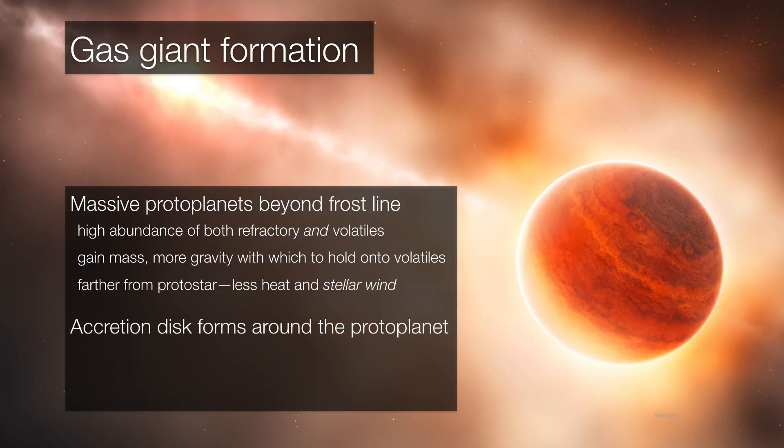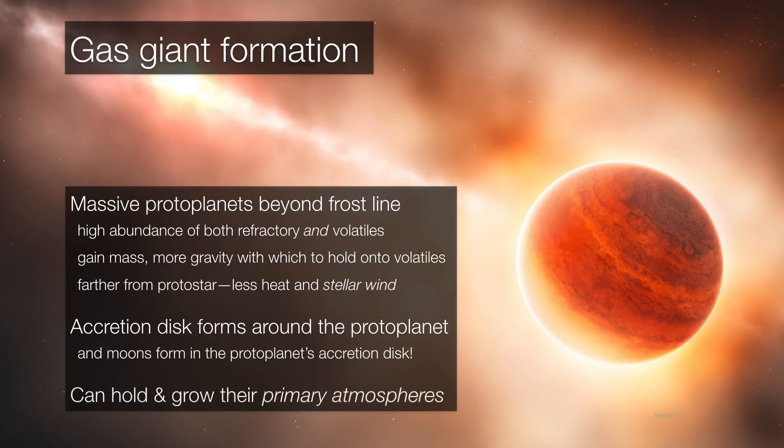An accretion disk forms around the proto-planet - it's like a disk within a disk. Even moons can evolve from inside the proto-planet's own accretion disk. This allows these massive outer solar system proto-planets to grow what are called their primary atmospheres. That means the atmospheres of Jupiter and Saturn, for example, are the same atmospheres that they pretty much formed with.